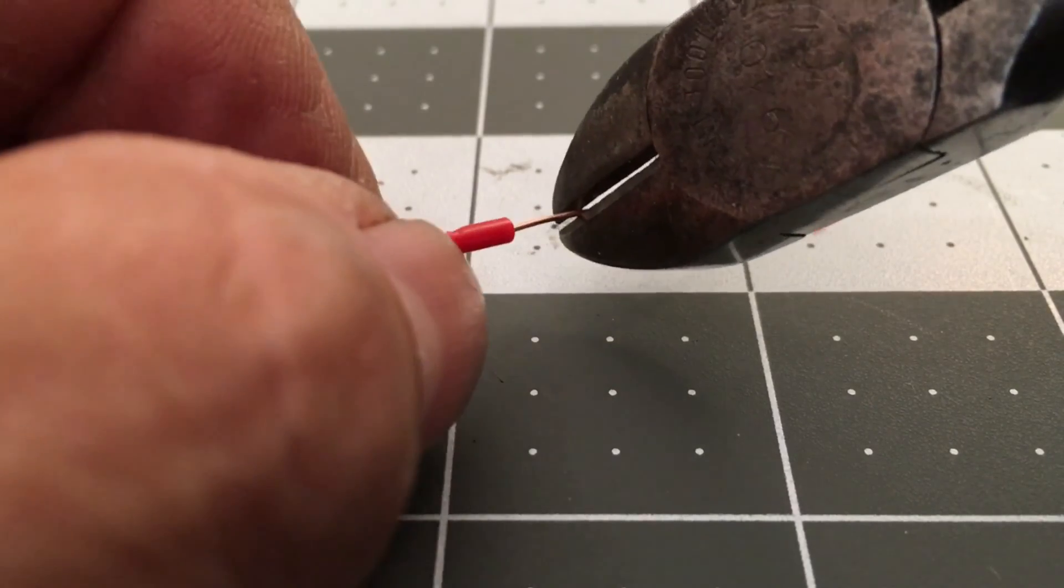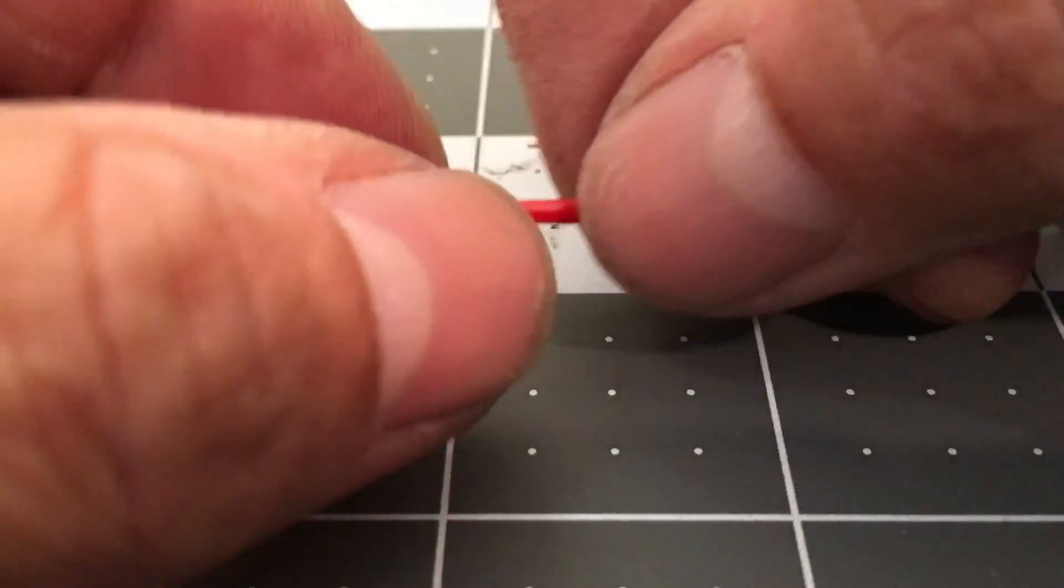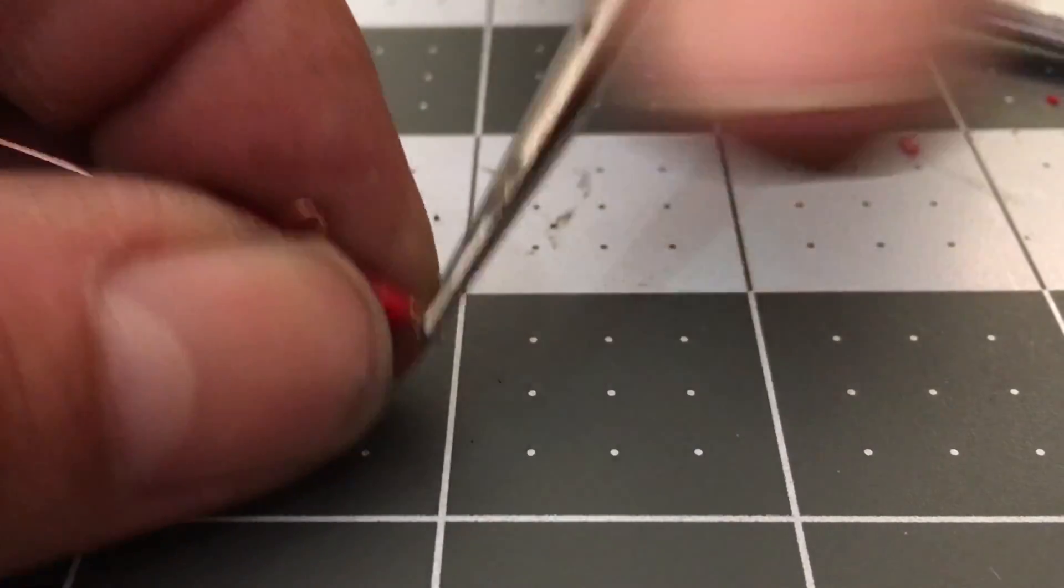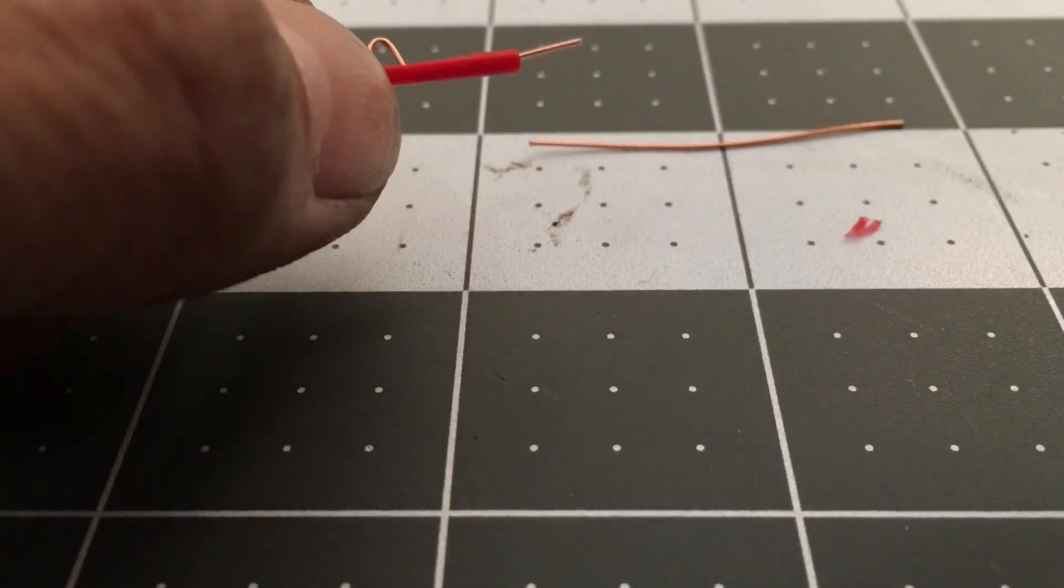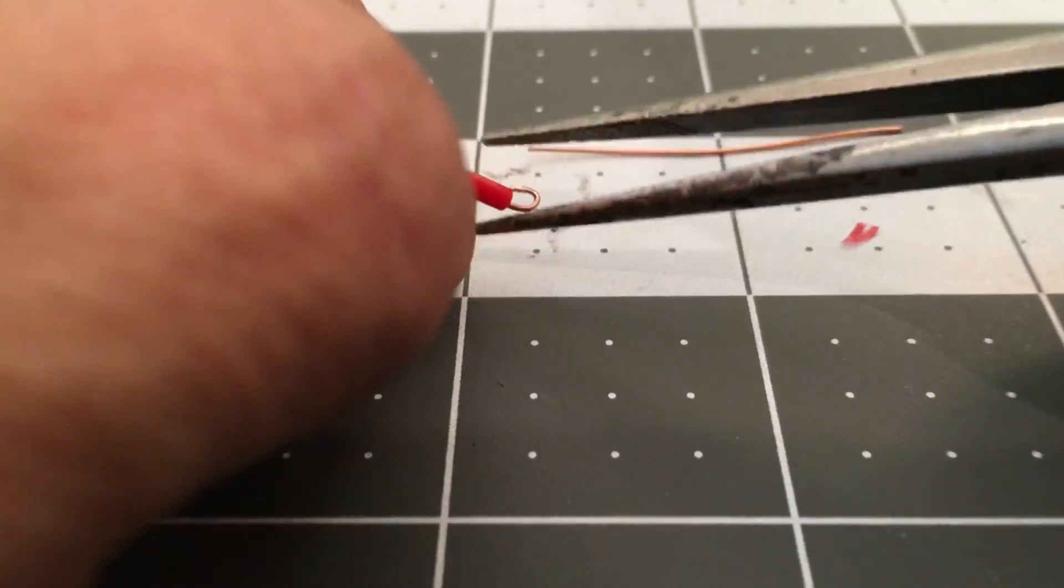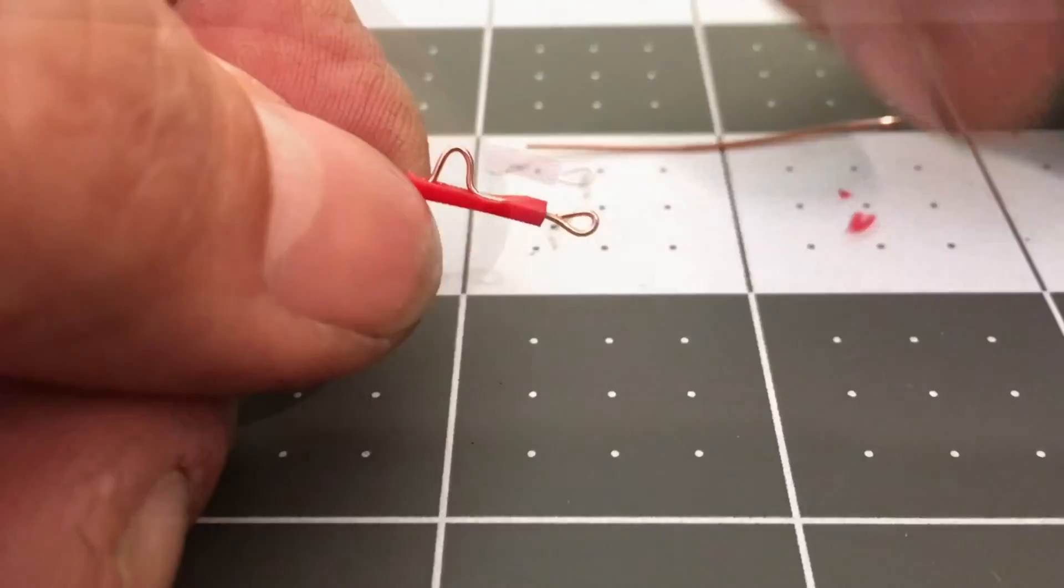Then I loop both of the ends over. One of the loops will make contact with the battery and the other will have a wire attached. Once that part's done, I work the lever back and forth to make sure everything moves freely.